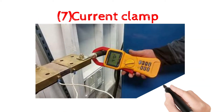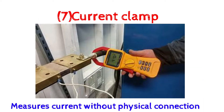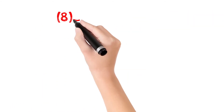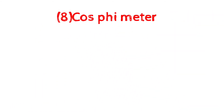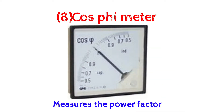7. Current clamp: measures current without physical connection. 8. Power factor meter: measures the power factor.